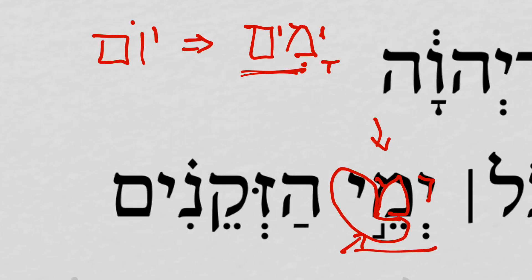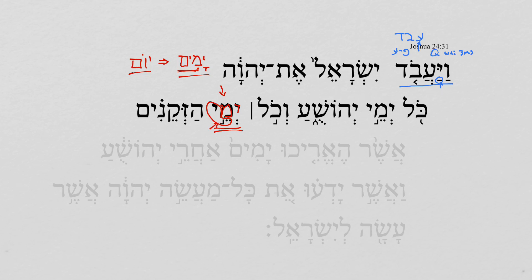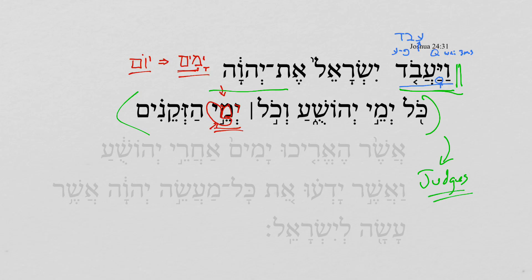So kind of a three-step: yom, yameh, yameh. So we read here a very remarkable verse in the Bible — Israel serving the Lord. And it's qualified: all the days of Joshua and all the days of the elders. This in so many ways sets up the days of the judges. And I'll see you in the next videos.